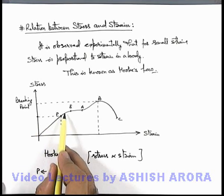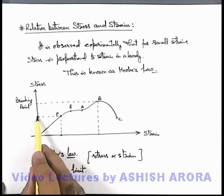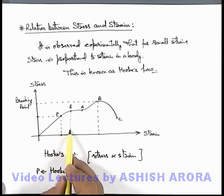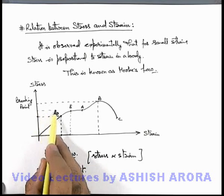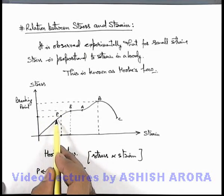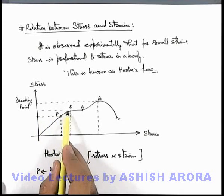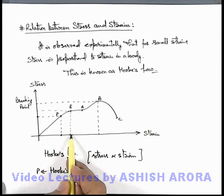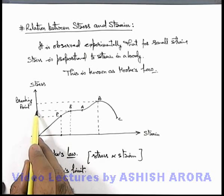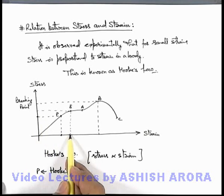Beyond point P, when stress is further increased, for a relatively small increase in stress, strain will increase to a relatively larger value up to point E. This point E we call the elastic limit, up to which the body behaves as elastic. Beyond point E, as soon as the elastic limit is approached, strain continuously increases without any increase in stress, as the elasticity limit of the body is crossed.